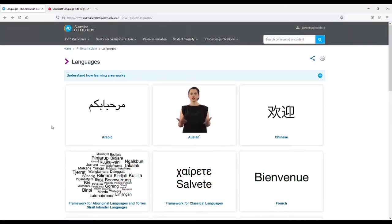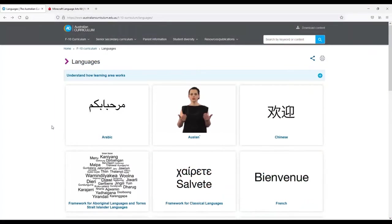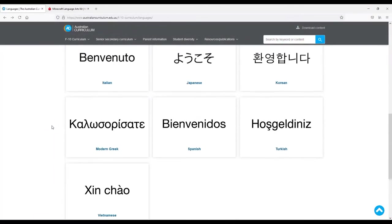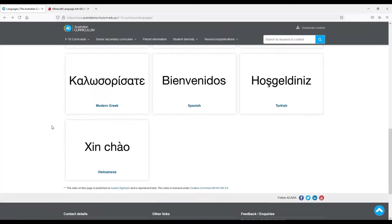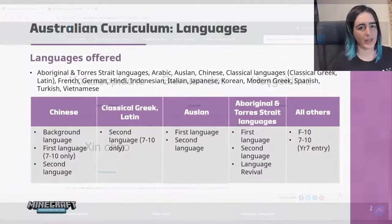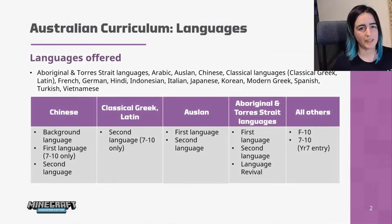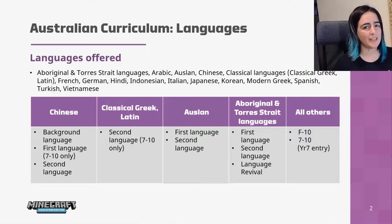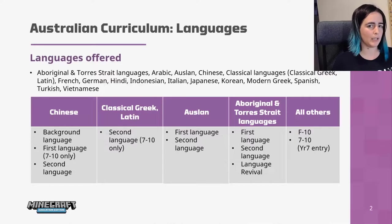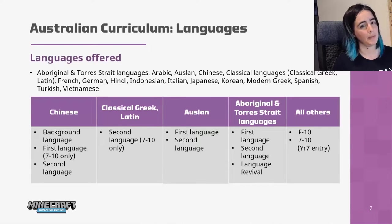The Australian Curriculum for Languages covers a range of learning sequences for a wide variety of different languages. Generally each school would offer at least one language other than English, possibly more.